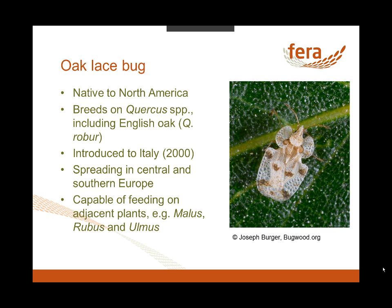As mentioned before, if these lace bugs can't find their preferred host they will feed on other plants, but won't necessarily be able to breed or complete their life cycle on them. The oak lace bug has been recorded on Malus, Rubus, and Ulmus growing in the vicinity of infected trees. You can see the adult is a sort of creamy color and has a series of brownish markings or spots, but these can be highly variable — so it can look quite different across different populations, varying in the numbers of these brown spots.